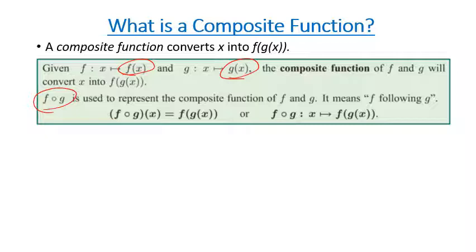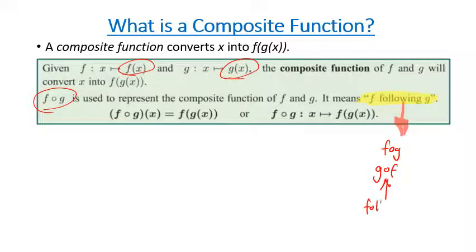So fog means following on from g. If you were going to swap that around and go following on from f, it would be gof. So gof is following on from f, and fog is following on from g. Essentially we're taking one function and putting it into another function to give us an overall function. I'll do some examples and hopefully that makes sense.